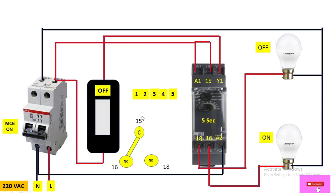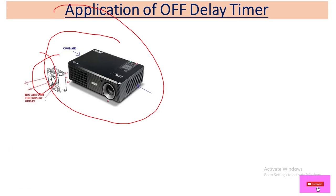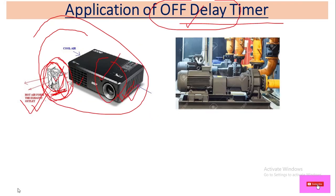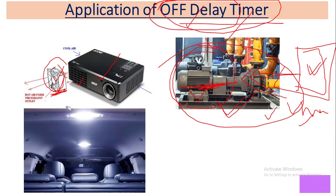So that is how the off-delay timer works: after you switch off, the contacts maintain their state for the set delay period — here five seconds — then revert to normal. A practical application is a projector cooling fan: when you switch off the projector, after a few seconds only then will the cooling fan turn off. Another application is a chiller plant condenser pump, which stays running for some time after the chiller is switched off.